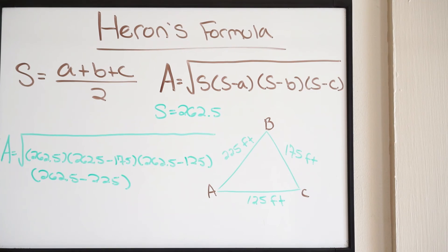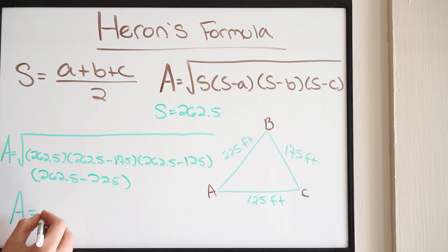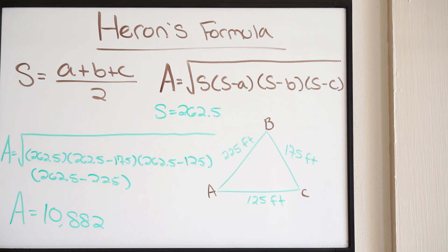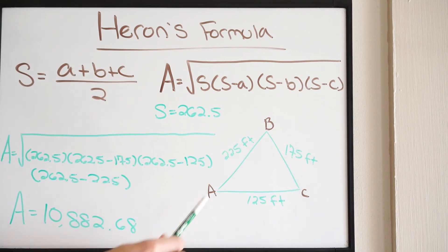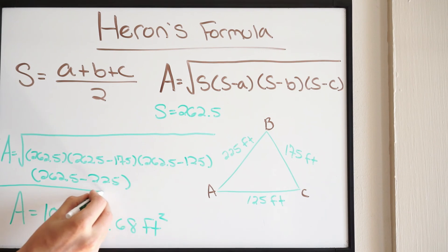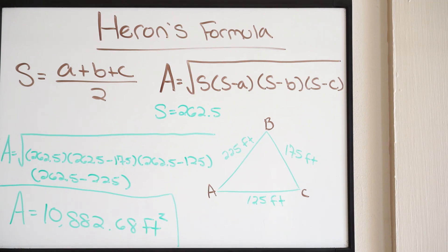And we get the following. The area of this triangle is 10,882.68. Our units are feet, so since we're talking about area, this is our final answer: the area of this triangle is 10,882.68 feet squared.